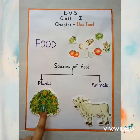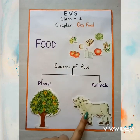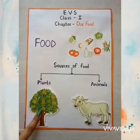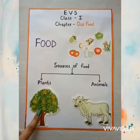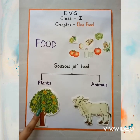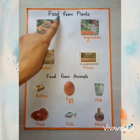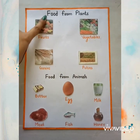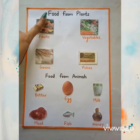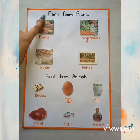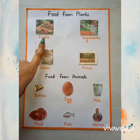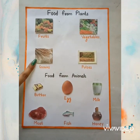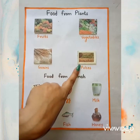Sources of food are plants and animals. We get food from plants and animals. Today I will tell you about the food we get from plants. Food from plants: we get many kinds of food from plants. The food we get from plants are fruits, vegetables, grains, and pulses.